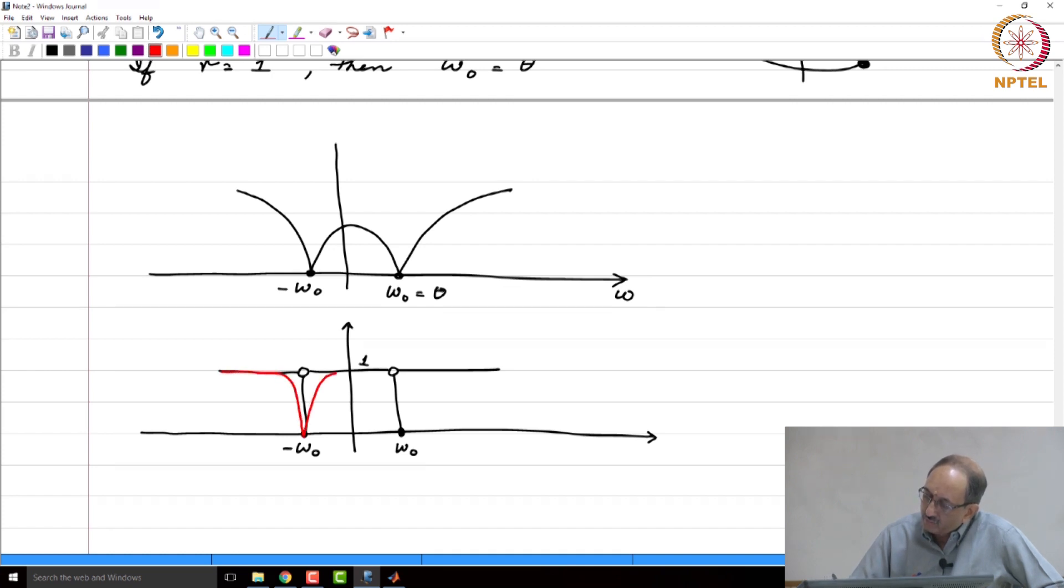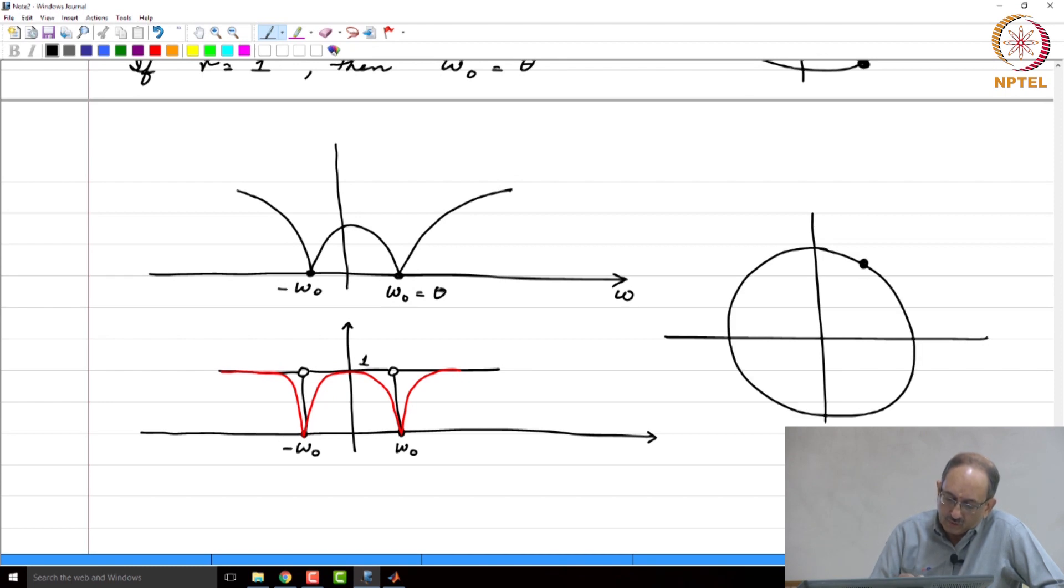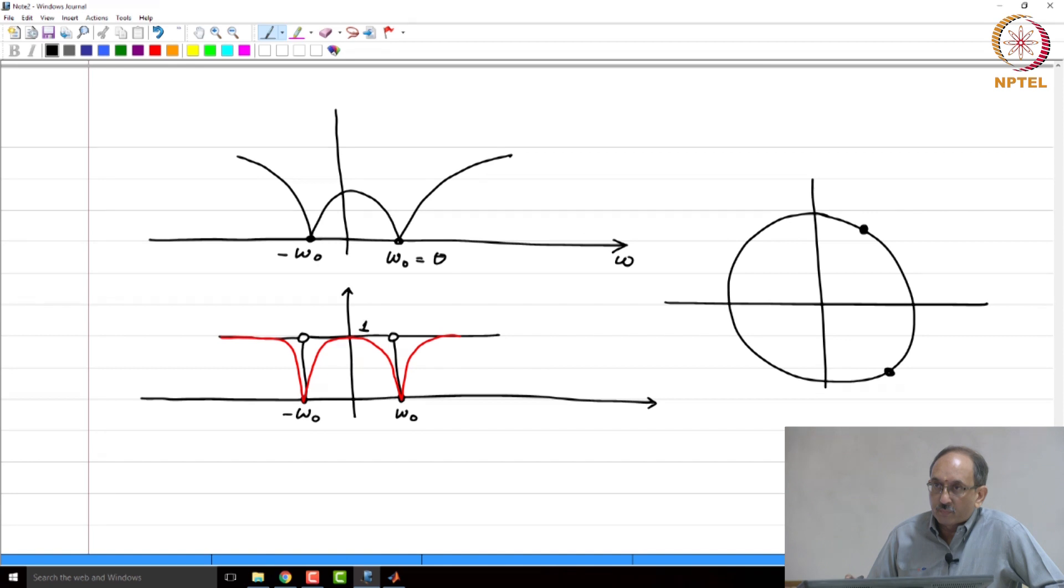Yeah, very good. You want the gain to come back to 1. So, you want to introduce poles now. So, you have the notch filter. And, you want to introduce poles and where do you want to introduce poles?